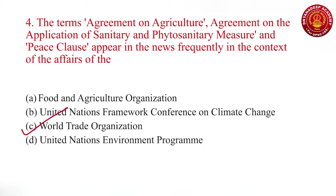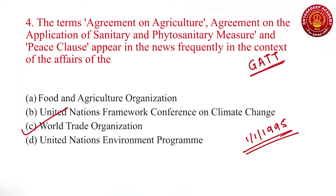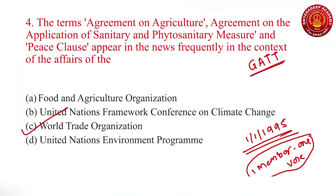The World Trade Organization is a permanent organization formulated under the Marrakesh Treaty after the Uruguay Round. WTO has replaced GATT — General Agreement on Trade and Tariff. WTO was established on 1st January 1995. Remember, the World Trade Organization is one of the most democratic organizations where, unlike the World Bank and IMF, the principle is one member, one vote. In IMF and World Bank, voting is decided by your contribution and quota.